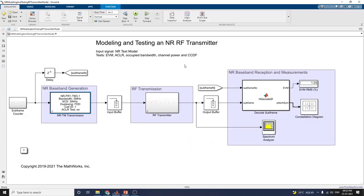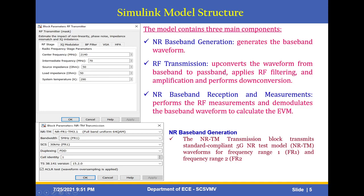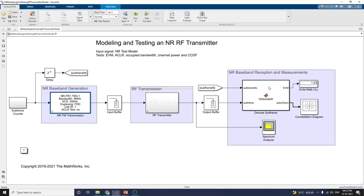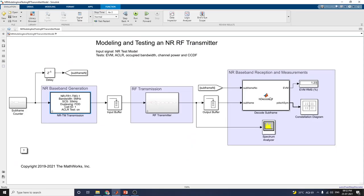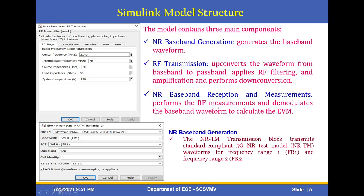The next block is the RF transmission block. This block up-converts the waveform from baseband to passband, applies RF filtering and amplification, and performs down-conversion. The next main block is the NR baseband reception and measurements block, which performs RF measurements and demodulates the baseband waveform to calculate EVM. There is also an NR baseband generation block for the NRTM transmission, which transmits standard-compliant 5G NR test model waveforms for frequency range FR1 and FR2.